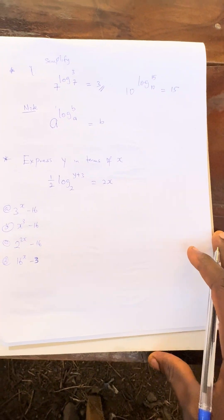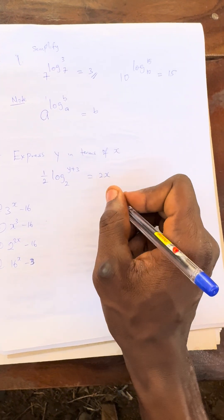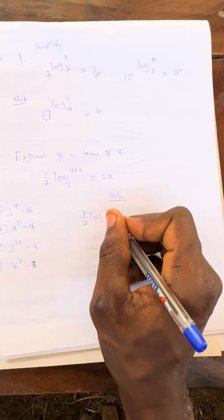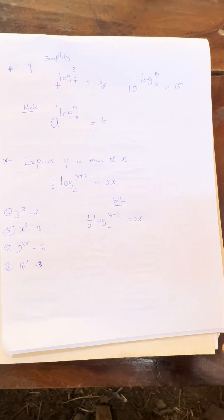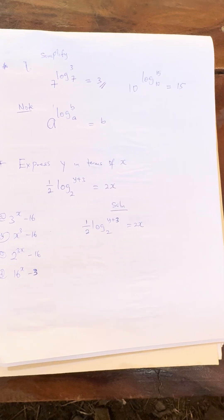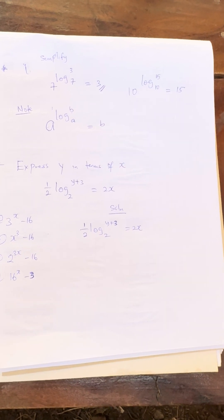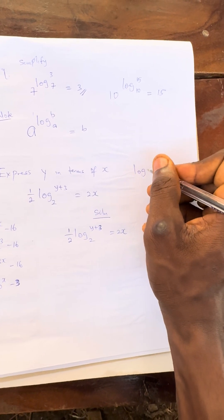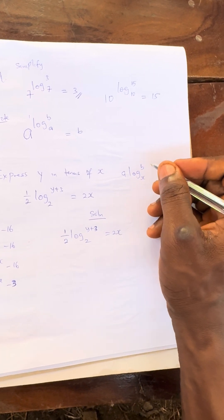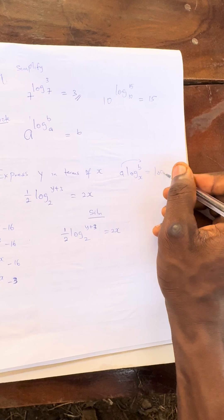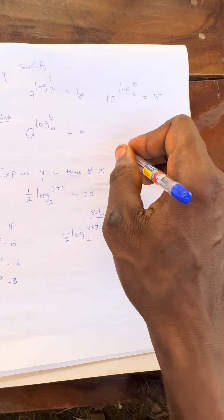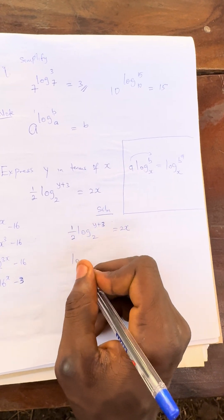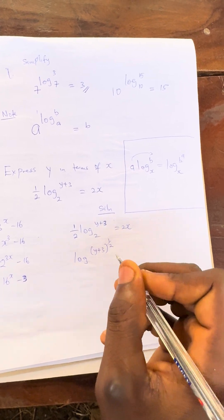Let us solve this question using the hand method first. We have 1 over 2 times log of (y plus 3) base 2 equals 2x. Our target is to make y the subject of the formula. There is a method that says if you have A times log B base x, you can take A to the top, so it becomes log of B raised to the power A, base x. So I can take 1 over 2 to the top, giving log of (y plus 3) raised to the power 1 over 2, base 2, equals 2x.